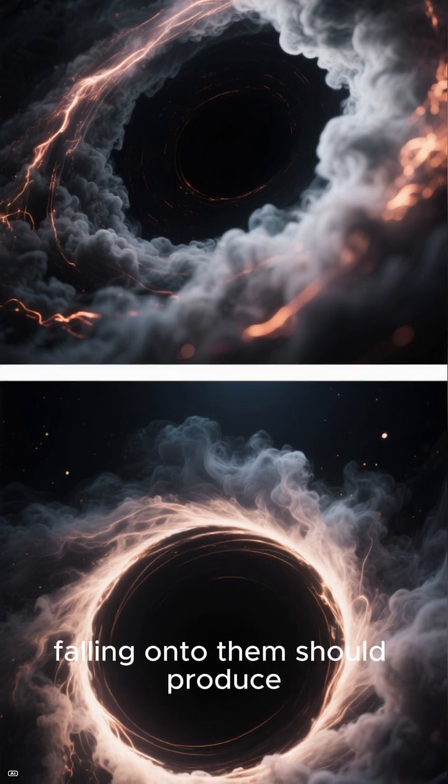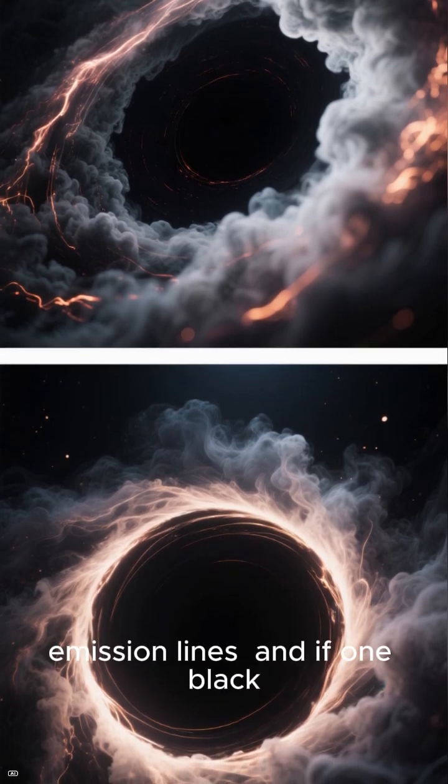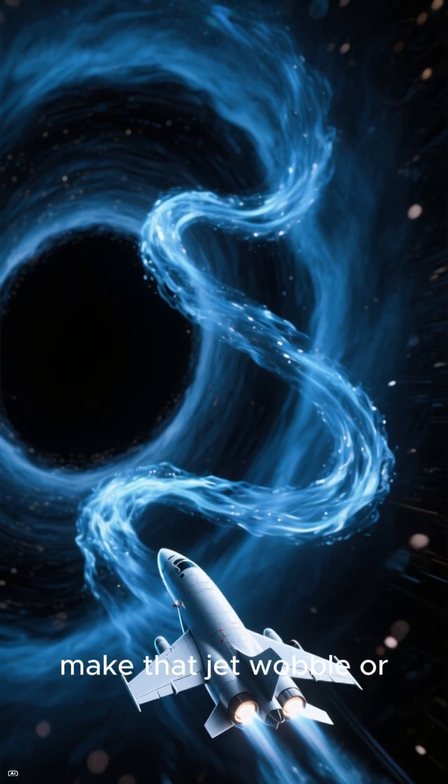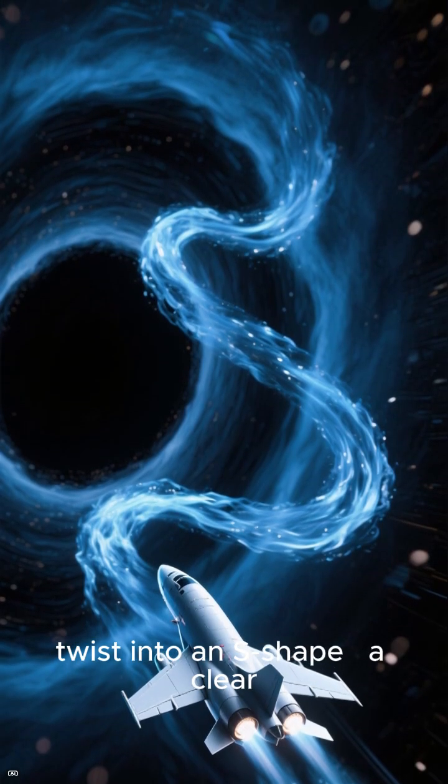As they orbit, gas falling onto them should produce double-peaked emission lines, and if one black hole launches a jet, its orbital motion could make that jet wobble or twist into an S shape, a clear sign of a binary system.